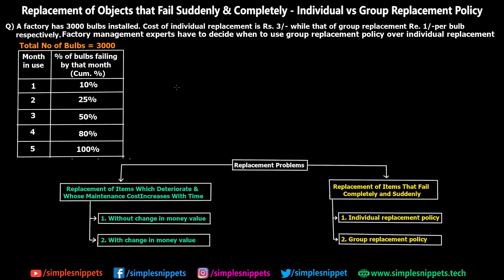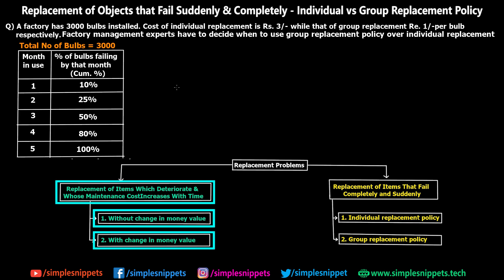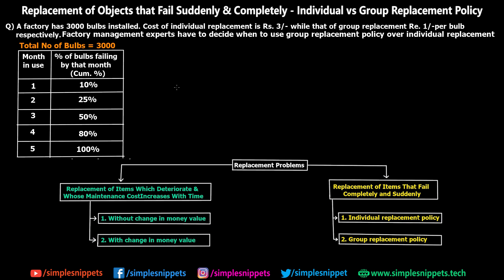In the previous couple of videos we've been going through replacement theory and we've also seen two numericals based on replacement of deteriorating assets, wherein the two subtypes were change in money and without change in money. If you've missed those videos you can check them out in this playlist. Now this is a completely different type of replacement problem — in this type, objects or assets fail completely and suddenly.